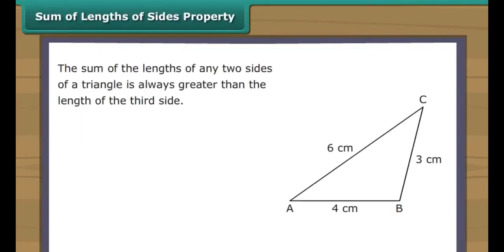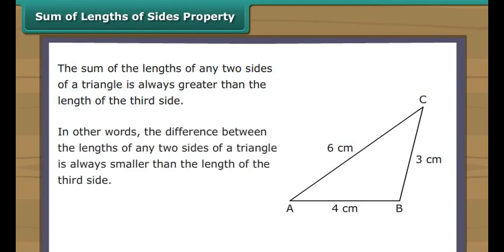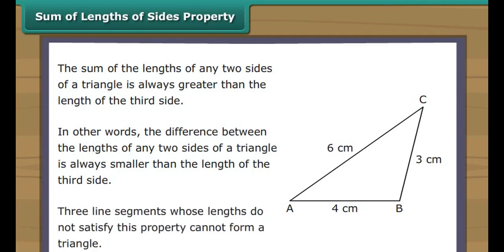Sum of lengths of sides property. The sum of the lengths of any two sides of a triangle is always greater than the length of the third side. In other words, the difference between the lengths of any two sides is always smaller than the length of the third side. Three line segments whose lengths do not satisfy this property cannot form a triangle.